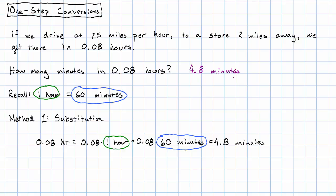And that seems reasonable, right? Driving to the store two miles away, taking about five minutes, that's a reasonable amount of time. So that's one method of converting units. And for very simple conversions like this, this is probably the easiest method. But for more complicated conversions, like we're going to see in later videos, we want a different method.